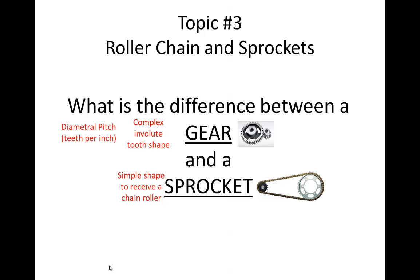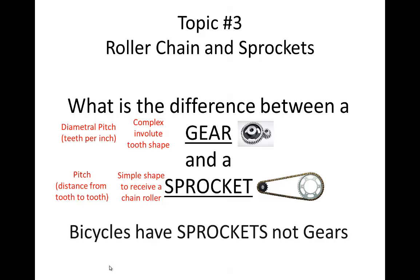Gears are specified by their diametral pitch — the teeth per inch calculation without the pi — and sprockets are specified simply by the pitch, or distance from one tooth to another. Perhaps cyclists have contributed to the confusion between gears and sprockets because most of them use the wrong term — bicycles have sprockets, not gears.